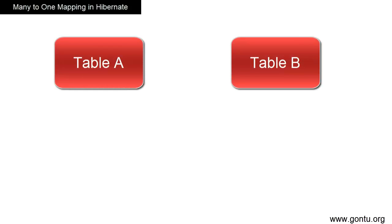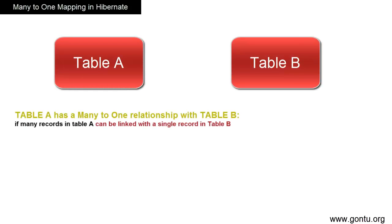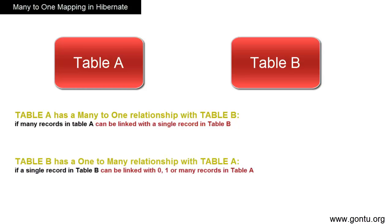Before the demo, let's see what exactly is a many-to-one mapping between two tables in a database. Table A is said to have a many-to-one relationship with table B if many records in table A can be linked to a single record in table B. And table B is said to have a one-to-many relationship with table A if a single record in table B is linked to 0, 1, or many records in table A.